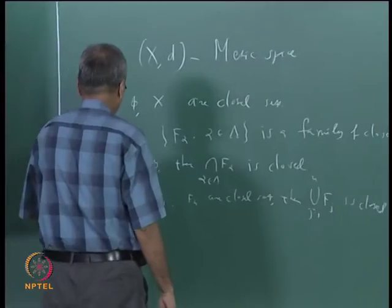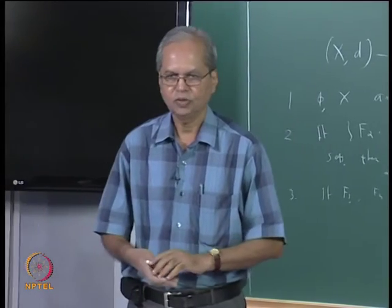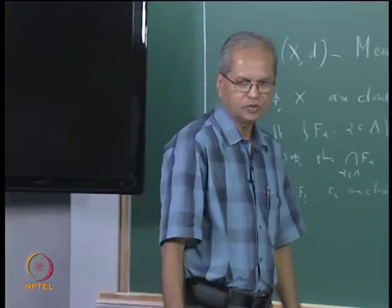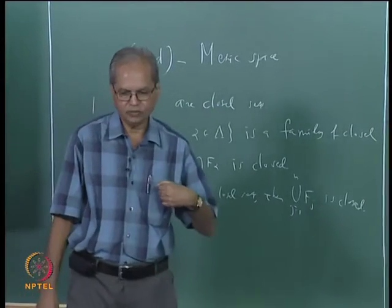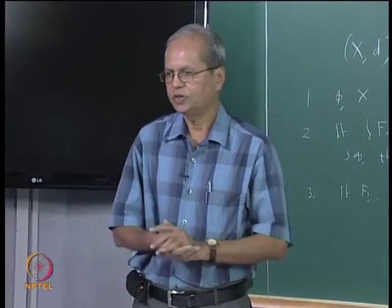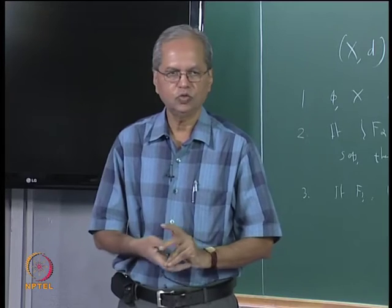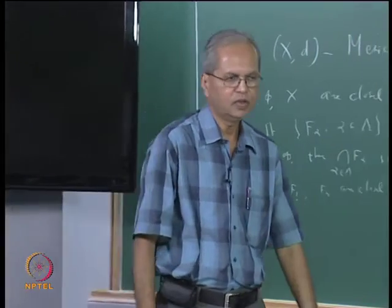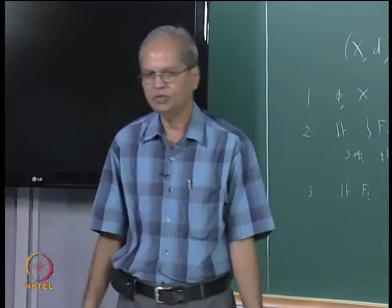In the discrete metric space, every subset is open, which also means every subset is closed because its complement is open. In case of the real line, every non-empty open set is a union of a countable family of disjoint open intervals. This also tells us how to get closed sets in the real line: take any countable family of open intervals and drop them, and whatever remains is a closed set. We have also seen that a closed ball is a closed set.